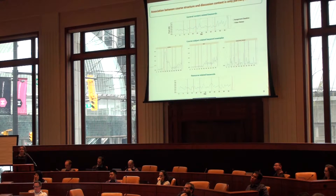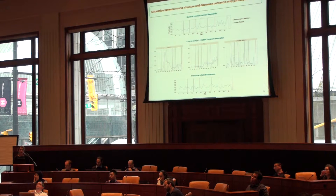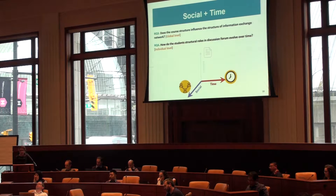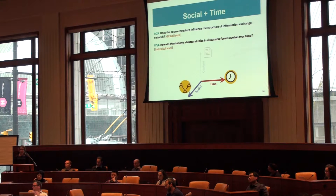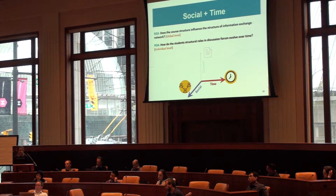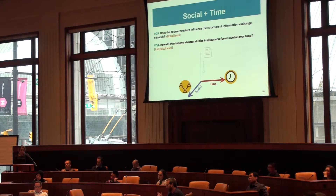Therefore, we conclude that the association between course structure is only partially observable on the content dimension. Coming to the social dimension, which is probably the second most important focus of this paper, we wanted to explore the social network emerging from this communication at two different levels: the global level and the individual level.